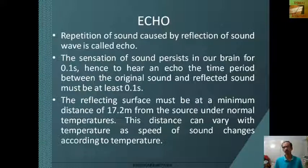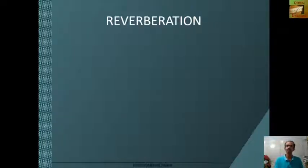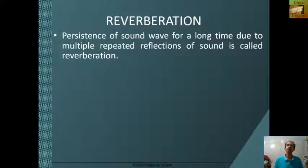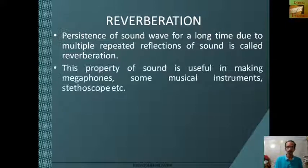Next is reverberation. In case of reverberation, multiple reflections happen. Persistence of sound waves for a long time due to multiple repeated reflections of sound is called reverberation. An example of reverberation is the rolling of thunder. This property of sound is useful in making megaphones, some musical instruments, stethoscopes, etc. Reverberation helps in making the sound much louder.